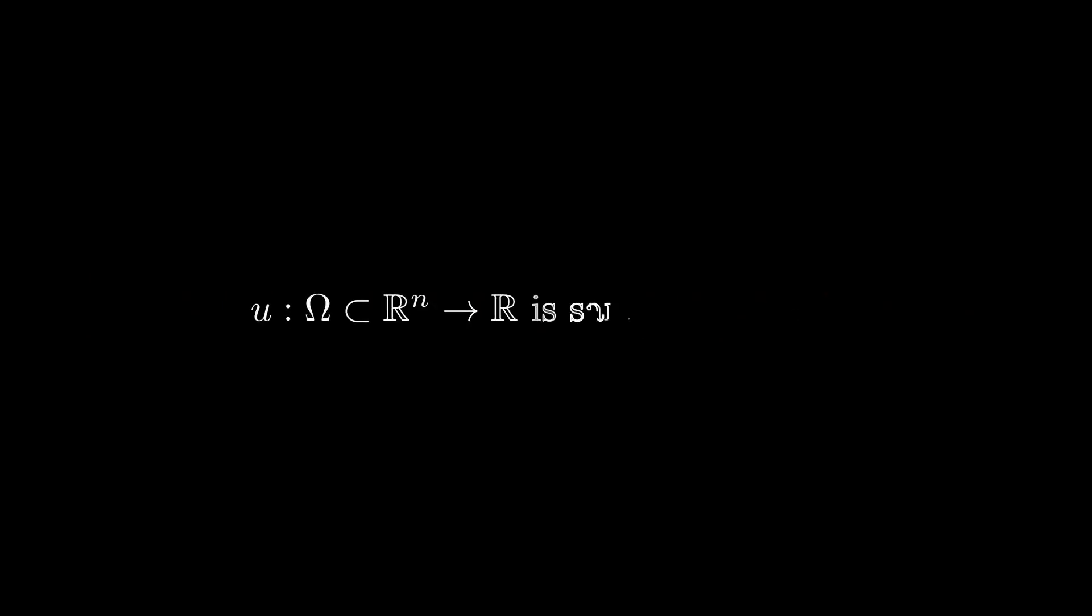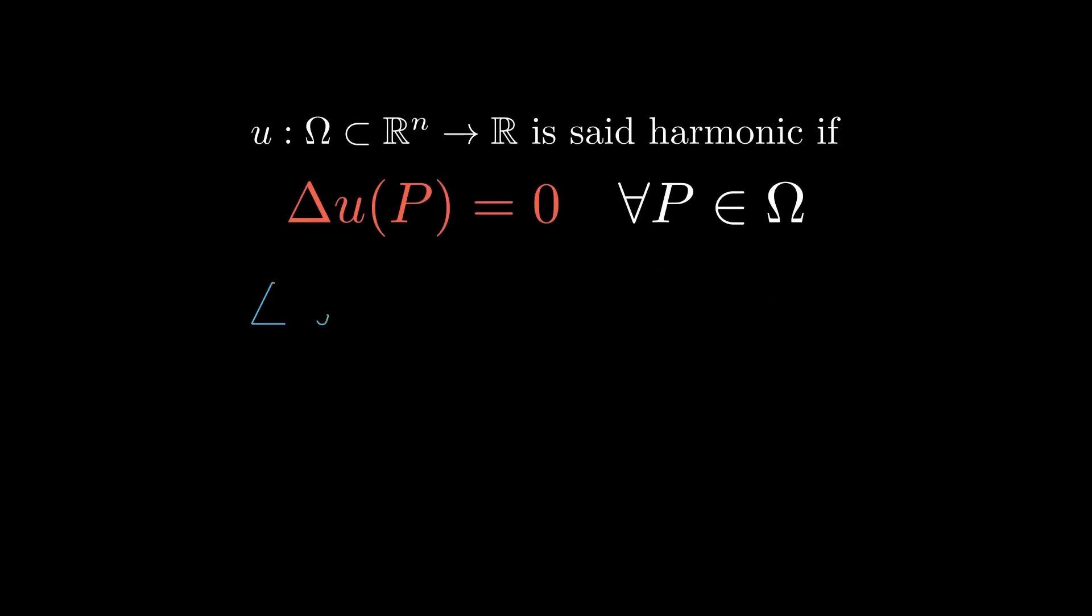A function u defined on a region called omega is harmonic if its Laplacian is zero at every point, meaning the sum of its second partial derivatives is zero.